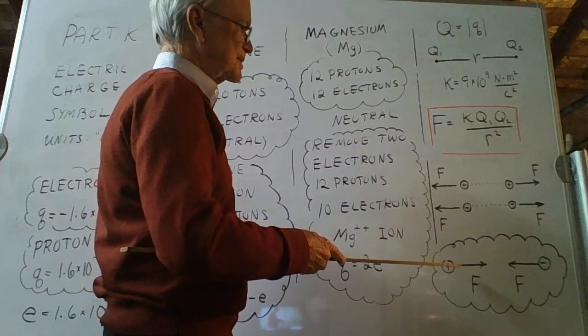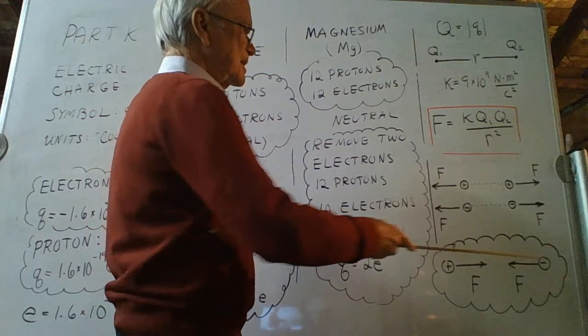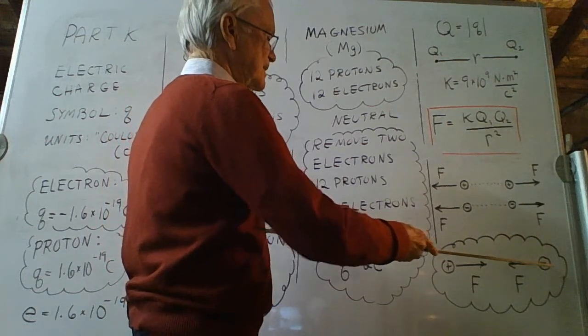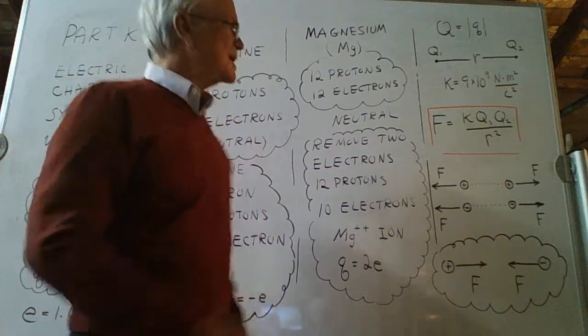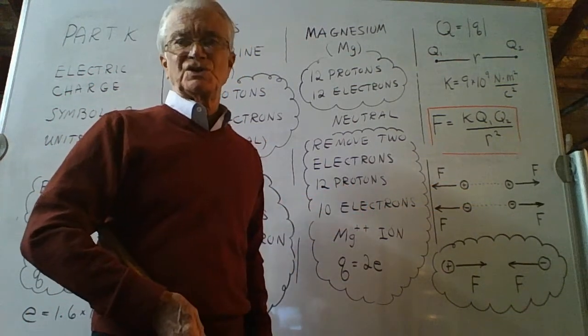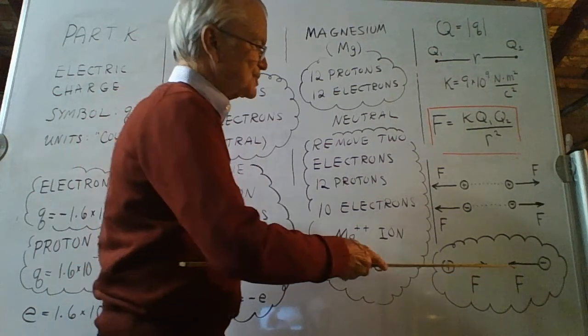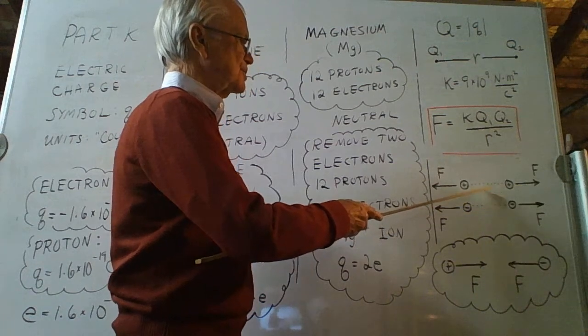We'll talk about how to calculate the value of these forces in a moment. Now let's look at two oppositely charged objects. A positively charged object, a negatively charged object. These objects pull on each other in contrast to these pairs of charged objects which push on each other. These attract. So here we have a force of attraction. Here we had forces of repulsion.